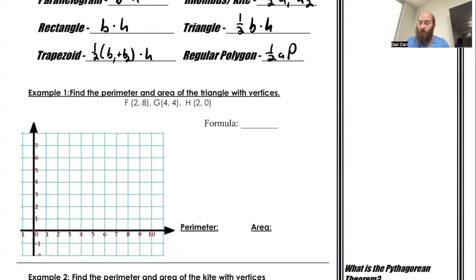So we look at this problem here, find the perimeter and area of the triangle with these vertices. So let me plot these points real quick. We got 2, 8 for F, G is at 4, 4, and then 2, 0 for H. All right, so I got a triangle made up of these three sides. So for distances, we can do distance formula. FH is easy, I just have to count that out. That is going to have a length of 8.